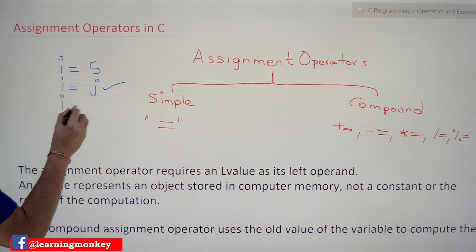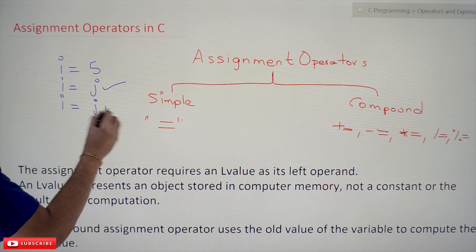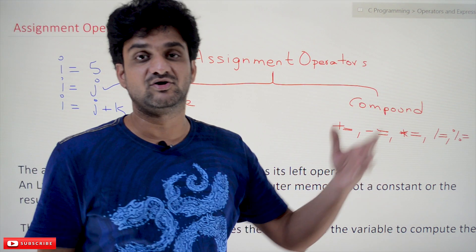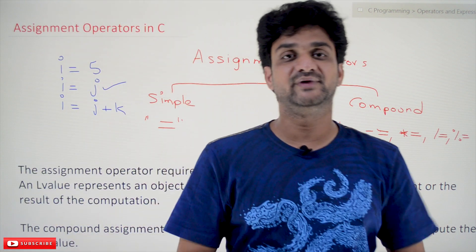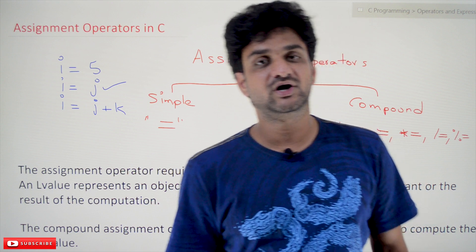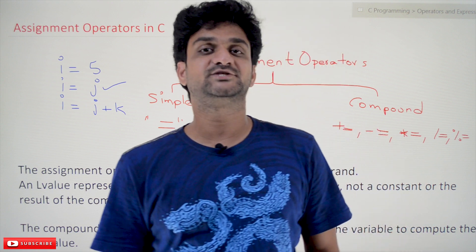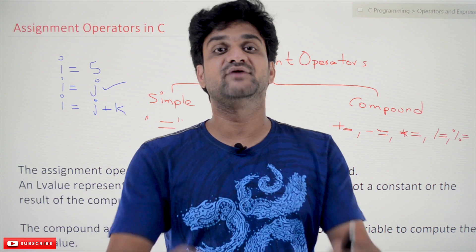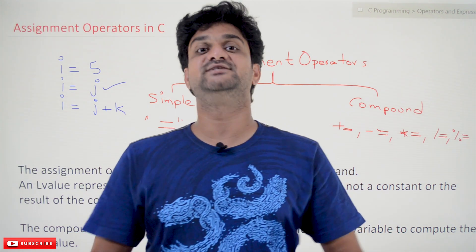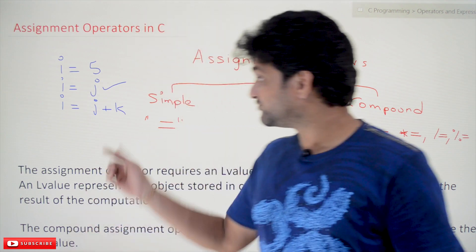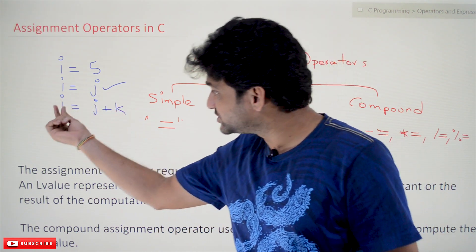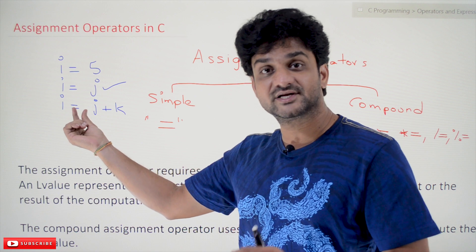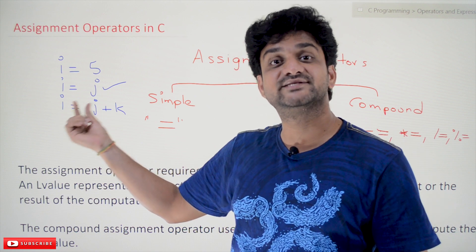Similarly, it can be I = J + K, so the result of an expression can also be stored. For example, if you want to execute a mathematical expression, that result needs to be stored in a variable. For that result to get stored in variable I, we need an assignment operator — that is what we call the assignment operator.